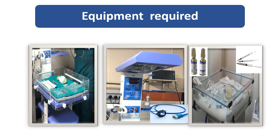If the patient requires further steps of resuscitation, an ambu bag with reservoir, all sizes of mask, oxygen tubing, and a flow meter for free oxygen supply should be available. A pulse oximeter to monitor SpO2 and a 3-lead ECG machine should be there. If intubation is required, laryngoscope and ET tubes of sizes 2.5, 3, 3.5, and 4 should be ready.